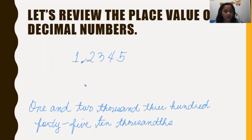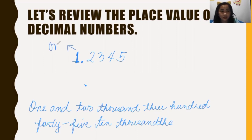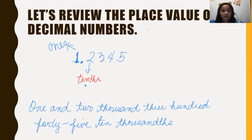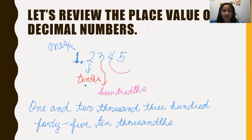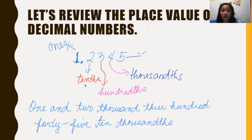Now let's review the place value. Since the 1 is a whole number, its place value is ones — it is the one's digit. After the decimal are the decimal digits. The place value of 2 is tenths, the place value of 3 is hundredths, the place value of 4 is thousandths, and the place value of 5 is ten-thousandths.